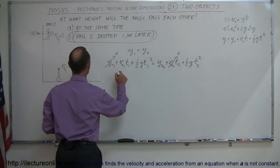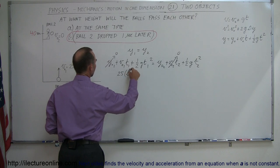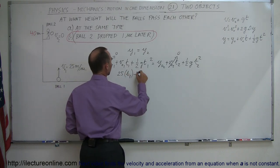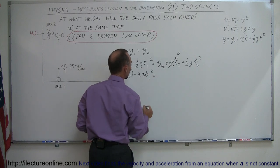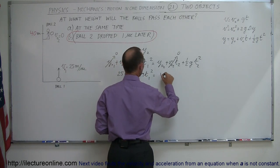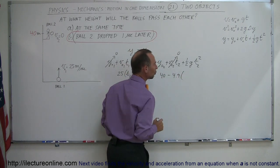So v initial for the first ball is 25 times t1 minus 4.9 t1 squared equals y2 initial would be 40 minus 4.9 times t2 squared.